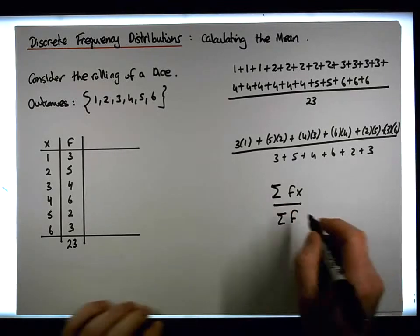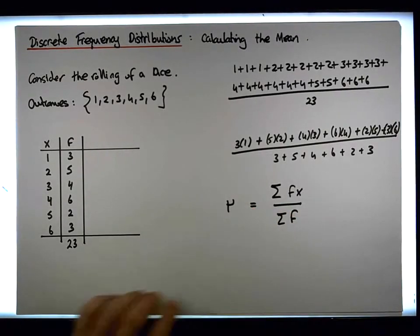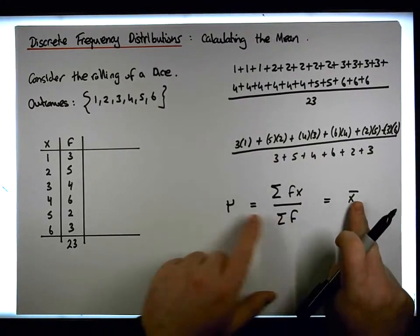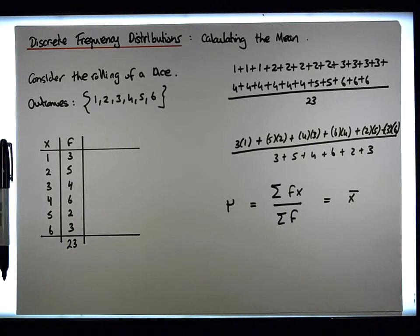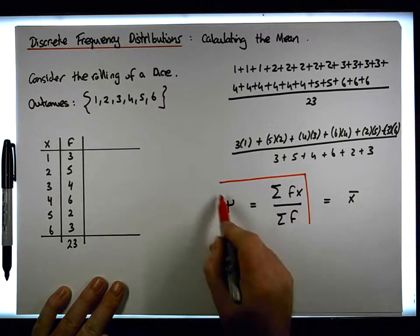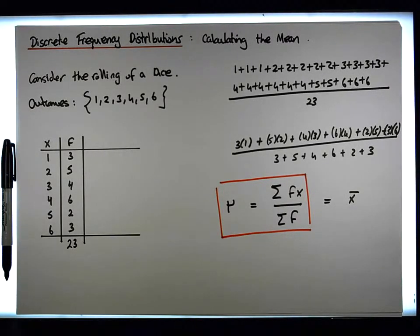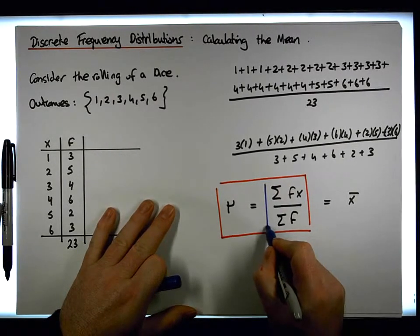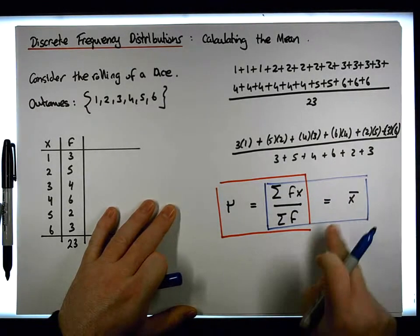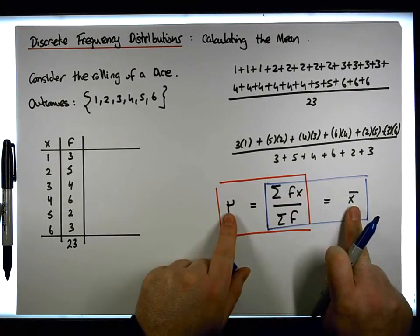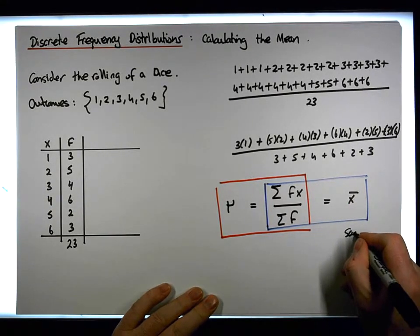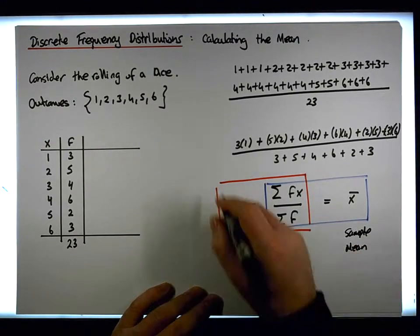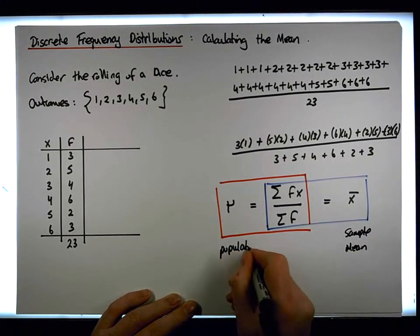So this is the formula for the mean. And actually, irrespective of whether it's population data or whether it's sample data, the calculation of the mean is exactly the same. If it's population data, the mean is calculated like that. And if it's sample data, the mean is calculated like that. The only difference is the symbol associated with them — the symbol representing the sample mean versus the symbol representing the population mean.